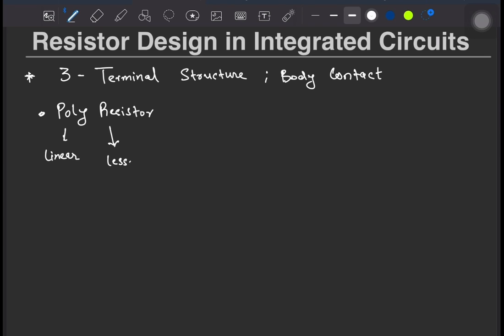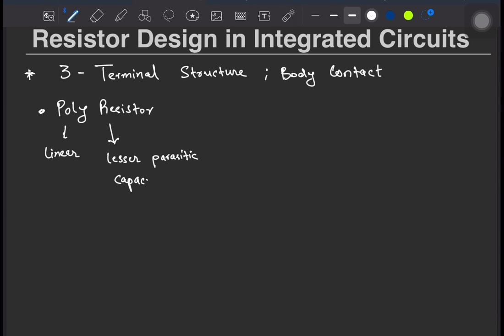Polyresistors are commonly used because they are more linear and offer lesser parasitic capacitances than other types of resistors. The structure is as shown. You have a silicon substrate, on top of which you have STI, that is shallow trench isolation, which is essentially SiO2.